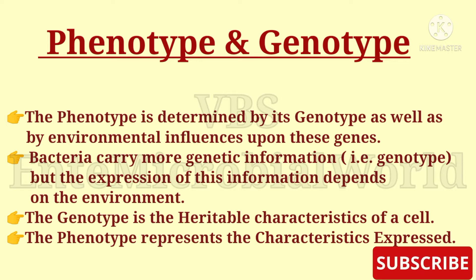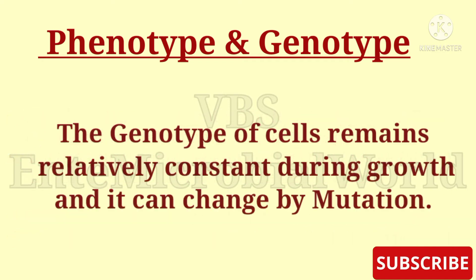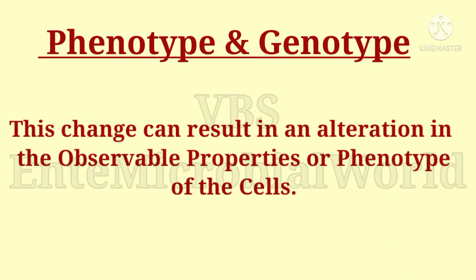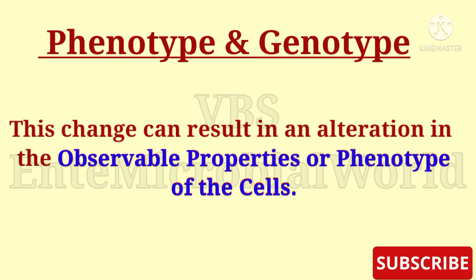Bacteria carry more genetic information — that is their genotype — but the expression of this information depends on the environment. Genotype is the heritable characteristic of a cell, and the phenotype represents the characteristics expressed. The genotype of cells remains relatively constant during growth, and it can change by mutation, which can result in an alteration in the observable properties or phenotype of the cells.